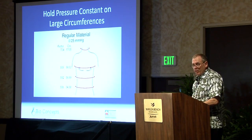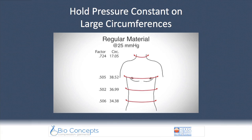Now let's look at the complementary calculation in which the pressure is held constant, so that we can see how the reduction factor — that is, the tension — is going to vary with the circumferences in order to achieve that pressure. Again, we are using our regular material. At large radii or circumferences, the forces, that is the tensions, required to achieve specific pressures dramatically increase. A reduction factor of 0.50 means the garment is going to be made about half the size of the patient — most patients couldn't actually don such a garment.